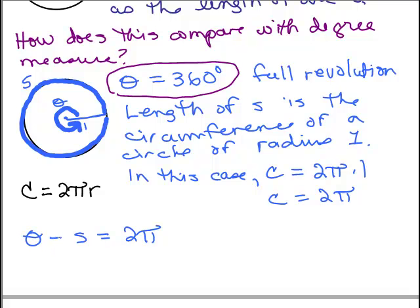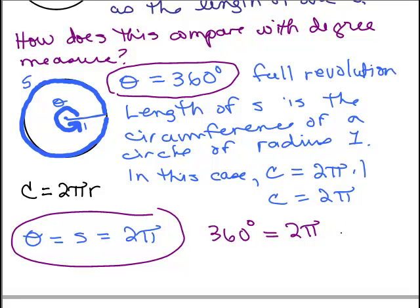Remember in this unit circle here, theta is the same thing. So this is the correspondence we want: 360 degrees is exactly the same thing as 2π.